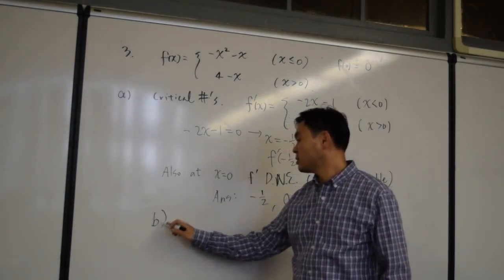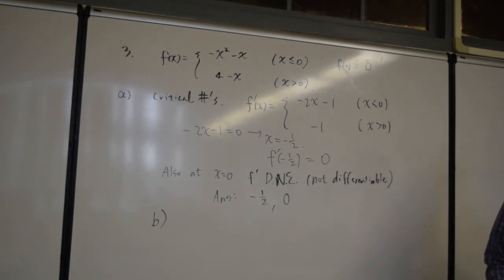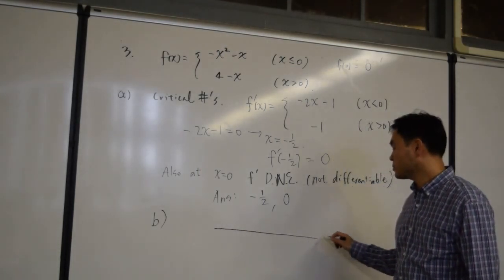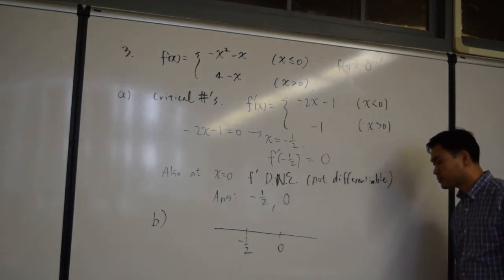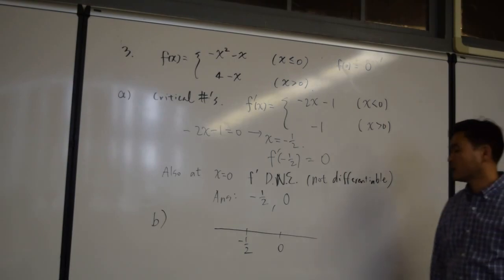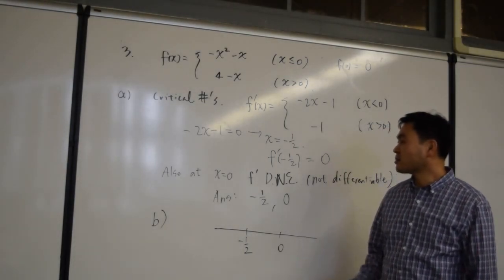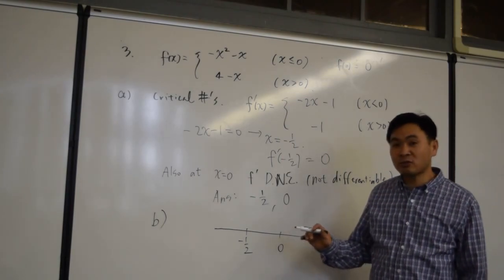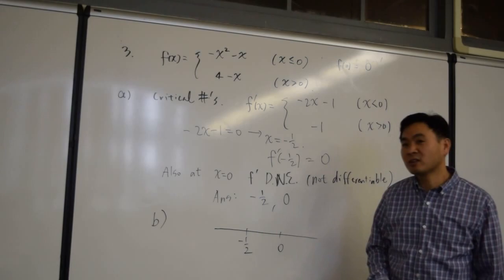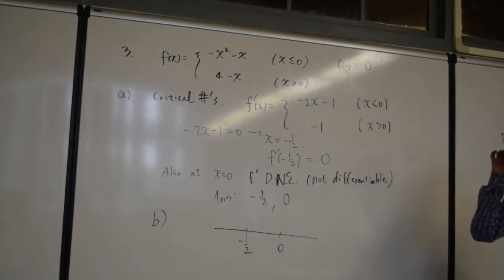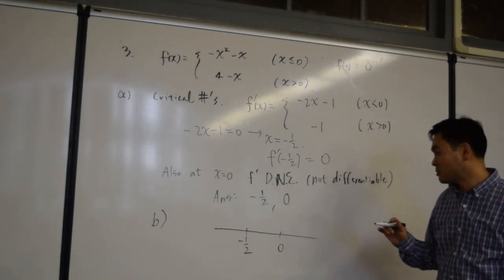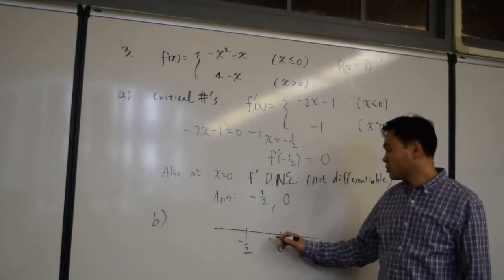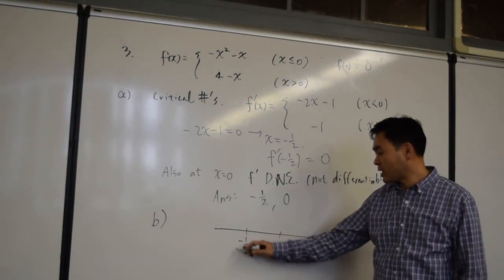Now, part B, you have to use the first derivative test to figure out the nature of the extreme out here. At negative one-half, at zero, actually, the first derivative test should be used only for a continuous case. When the graph has jump discontinuity, you actually need to look at the graph to figure out if it's a relative minimum or not. So we can only apply the first derivative test for negative one-half.